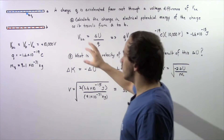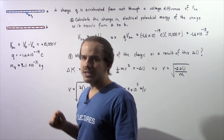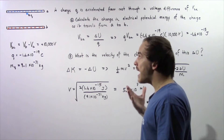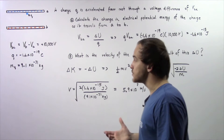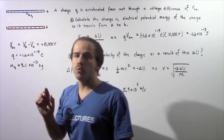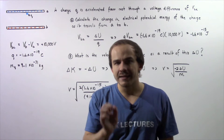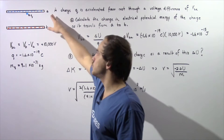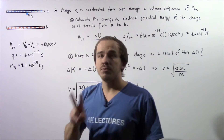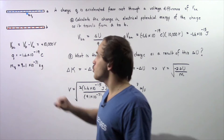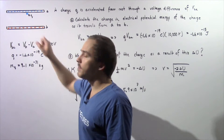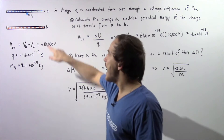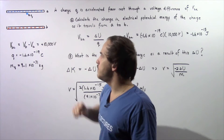Now let's look at the following diagram. We have two parallel plates: plate number one, which has a negative charge and is found at position A, and plate number two, which has a positive charge and is found at position B.